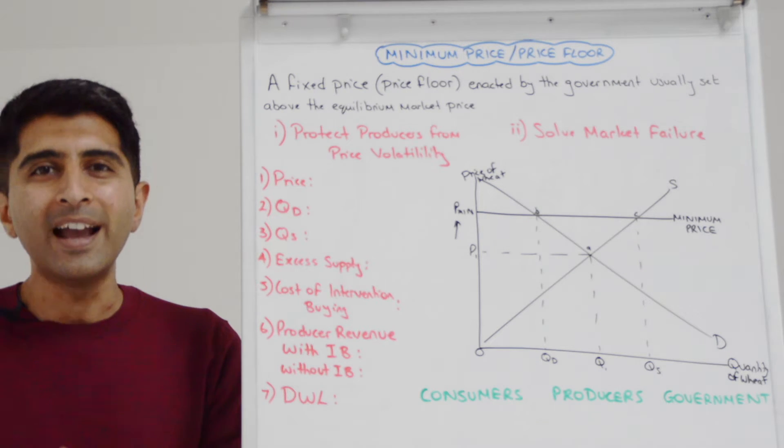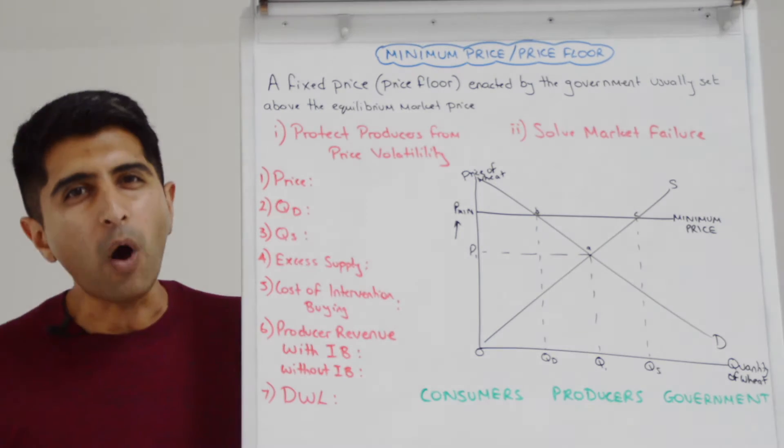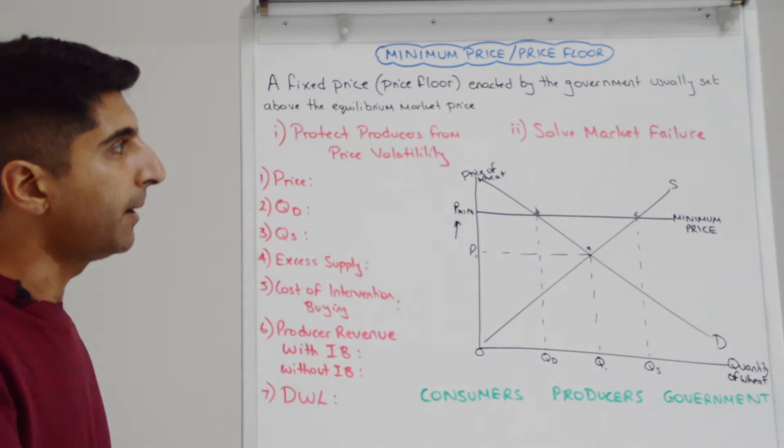We want to raise it by implementing a minimum price and legally therefore prices cannot fall below that level. Hence it's a floor price, the price floor. Legally that is the lowest price that can exist in the market, nothing below. So the question is why? Why would governments use minimum prices set above the equilibrium market price?